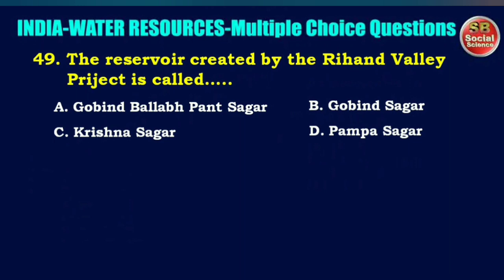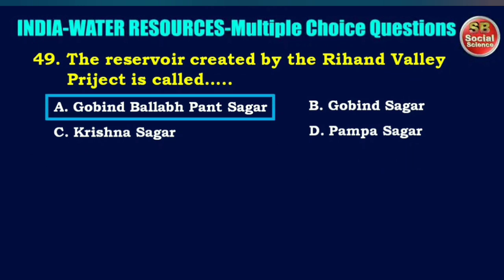The reservoir created by the Rihand Valley project is called — options are Gobind Ballabh Pant Sagar, Gobind Sagar, Krishna Sagar, or Pampa Sagar. The right answer is option A: Gobind Ballabh Pant Sagar.